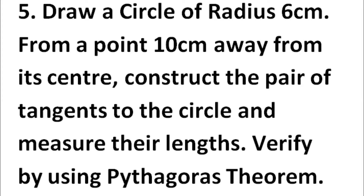This is the fifth problem. They said to draw a circle of radius 6 centimeters, then from a point 10 centimeters away from its center, construct the pair of tangents to the circle and measure their lengths. We then have to verify using the Pythagoras theorem.